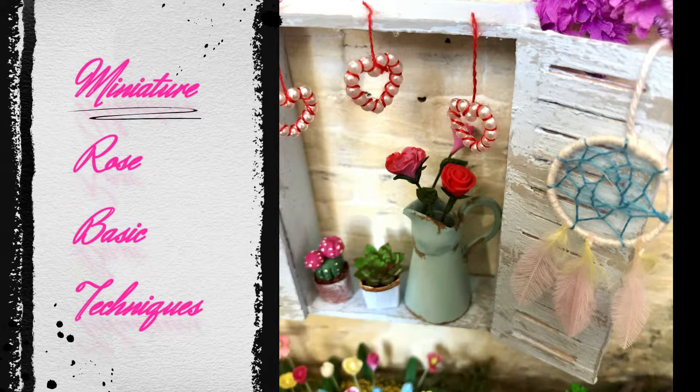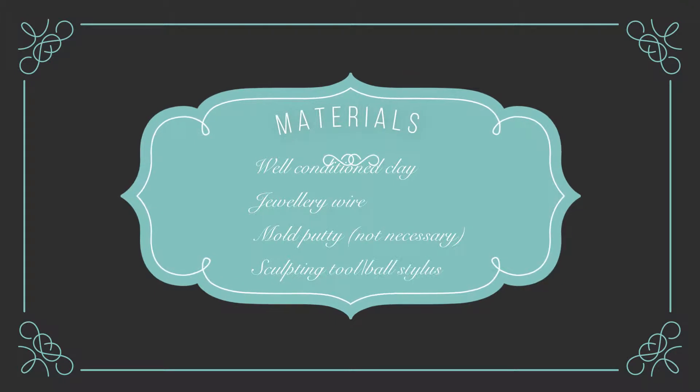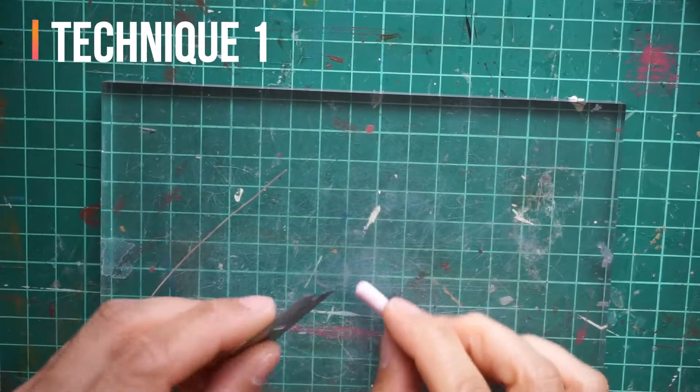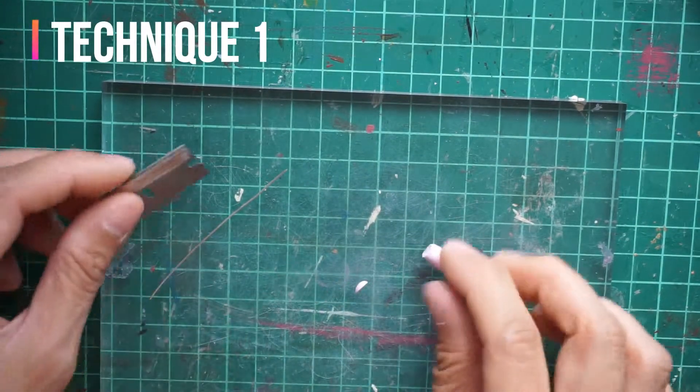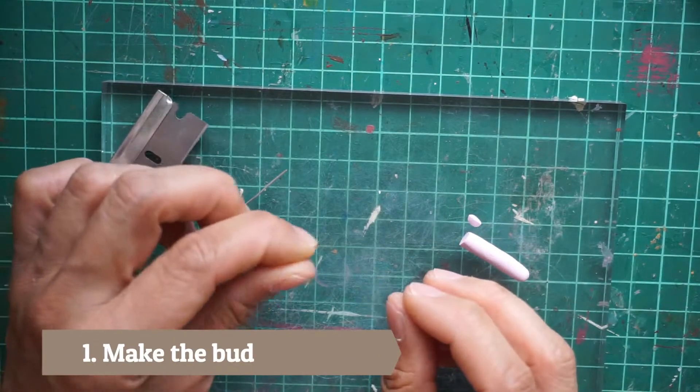Hello, today I'm going to show you two basic techniques on how to make a rose. Here are the materials that you need. Let me show you the first technique. Slice a very small amount of clay and wrap